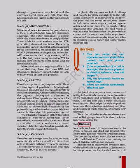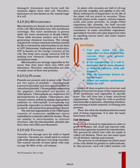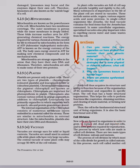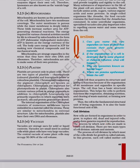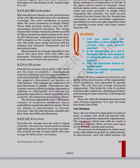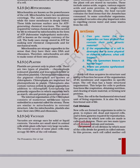Cell Division: New cells are formed in organisms in order to grow, to replace old, dead and injured cells, and to form gametes required for reproduction. The process by which new cells are made is called cell division. There are two main types of cell division: mitosis and meiosis.